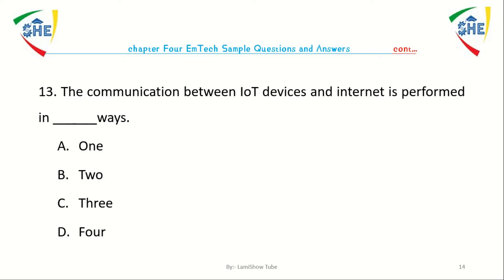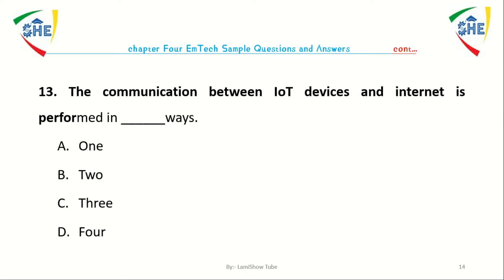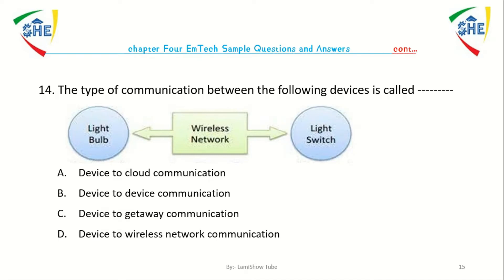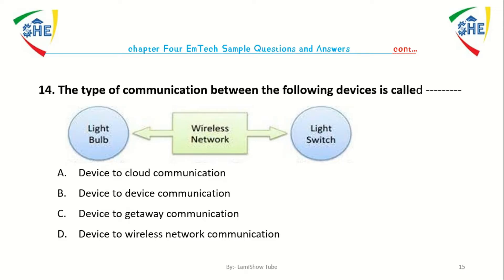Question number thirteen: The communication between an IoT device and the internet is performed in how many ways? A. 1, B. 2, C. 3, D. 4. Question number fourteen: The type of communication between the following devices is called dash. A. Device to cloud communication, B. Device to device communication, C. Device to gateway communication, D. Device to wireless network communication.